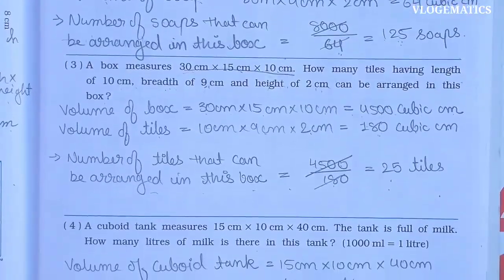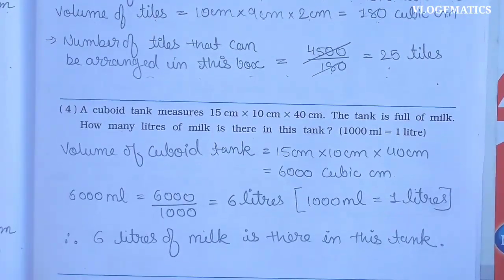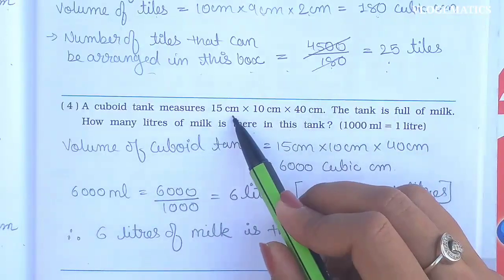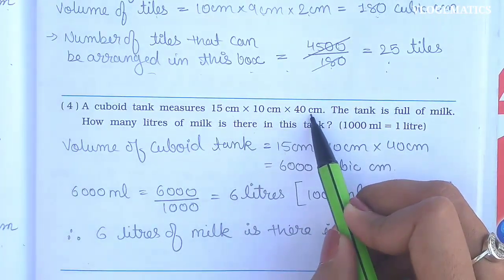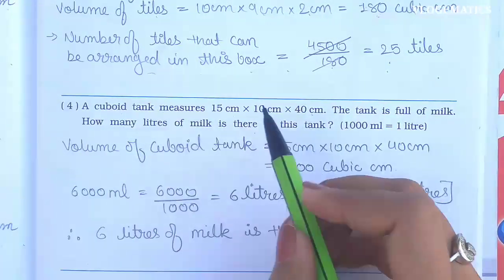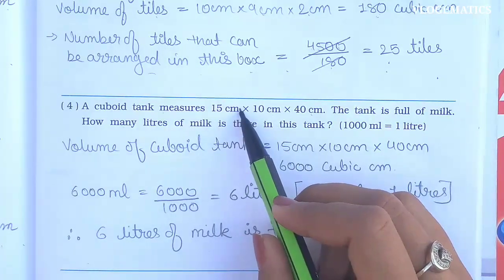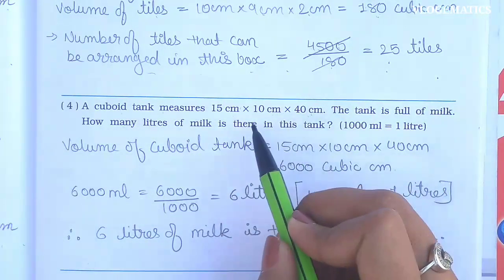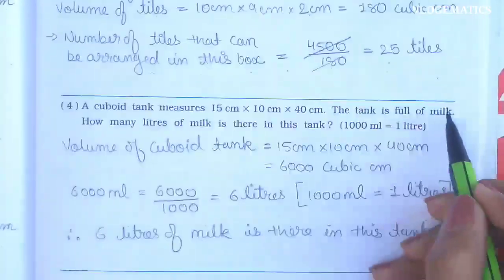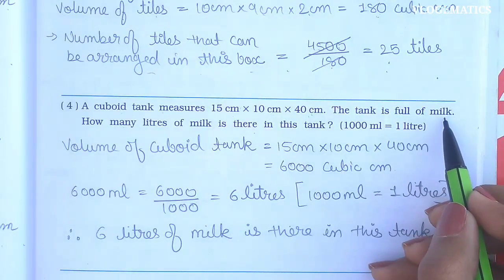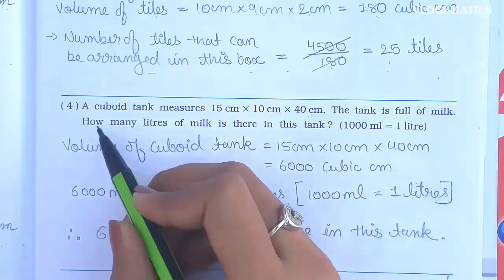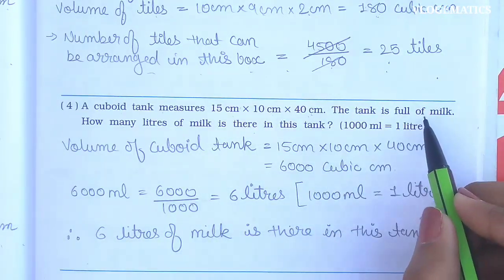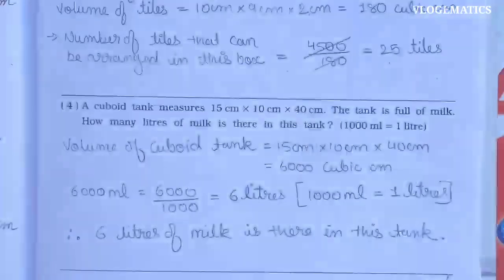Next, number 4: A cuboid tank measures 15 cm by 10 cm by 40 cm. It is a cuboid tank. The tank is full of milk. How many liters of milk is there in this tank? We have a hint: 1000 ml = 1 liter.